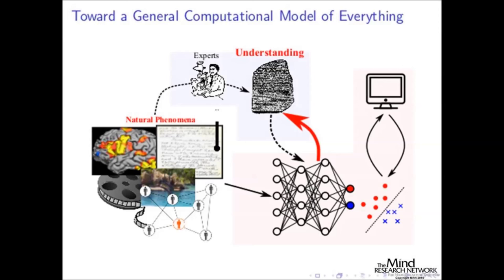As a machine learning and deep learning researcher, what I ultimately want is to build a general computational model of everything: brain measurements, natural language text, weather data, movies, images, social networks — whatever you can think of. No single scientist can find the correspondences between these many modalities using that much data, but these machine learning models can. And by looking at the trained model, we can actually learn something about the natural phenomena in a much more holistic way.